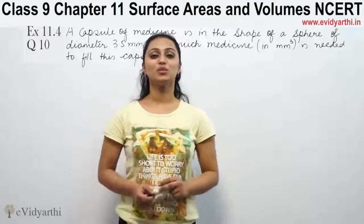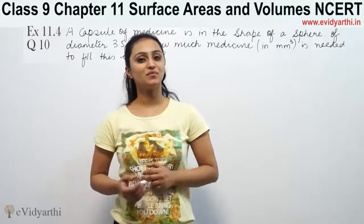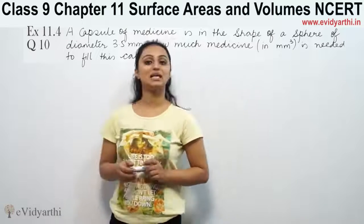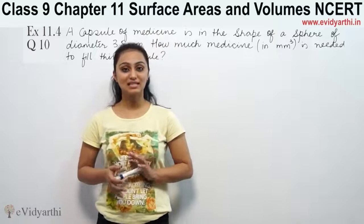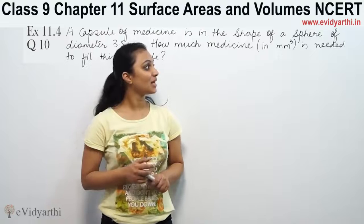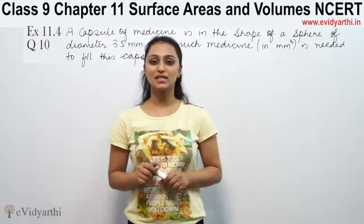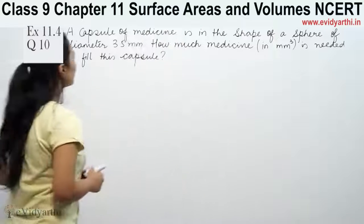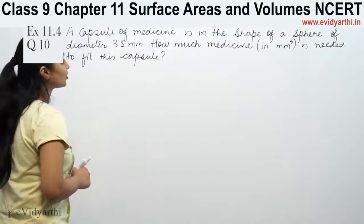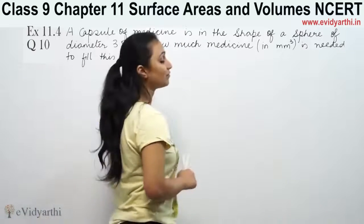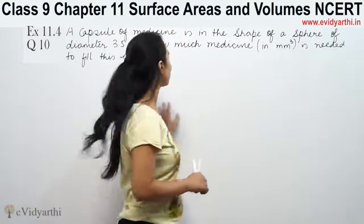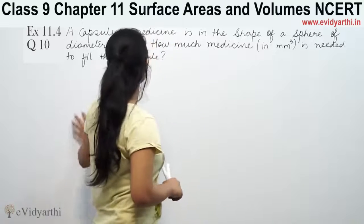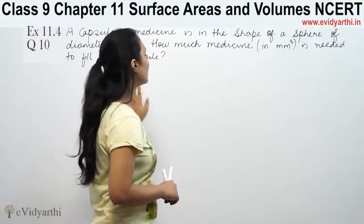Hi, this is Khushpoo with another question of surface areas and volumes. This is question number 10 from exercise 3.8, page 236 from NCERT. It says the capsule of medicine is in the shape of a sphere of diameter 3.5 mm. How much medicine is needed to fill this capsule?